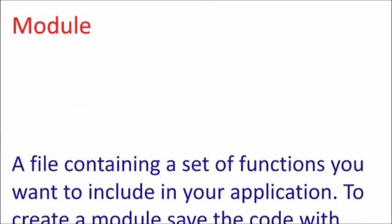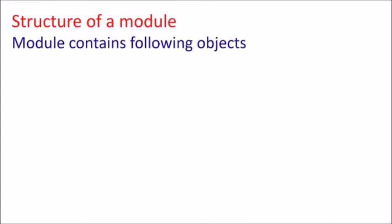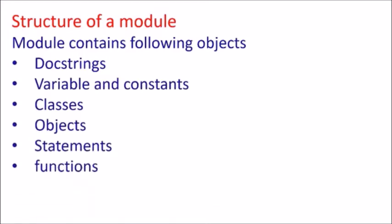Next comes module. A module is any file with extension .py — whatever programs you are saving, that is a module. The structure of a module contains: a doc string, variables and constants, classes, objects, statements, and functions. A doc string is the comment written in triple quotes. Classes are collections of functions along with variables, and objects are variables of type class. It can also contain normal statements and functions.